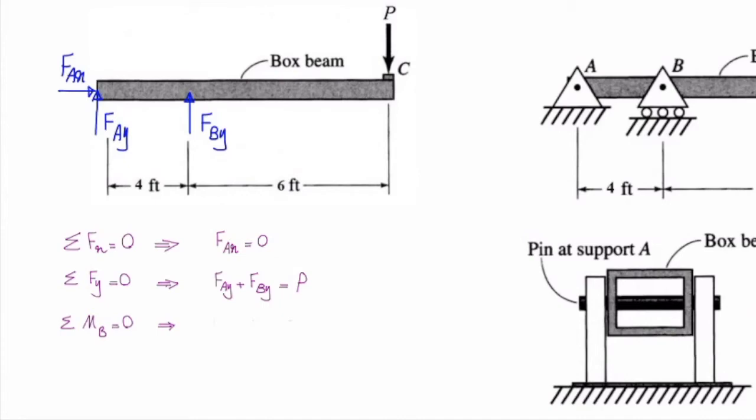That gives me four times FAy. I assume that clockwise is positive. How much is the moment caused by P? It's P times six. And that goes again clockwise, so I consider positive sign for that as well. So that would be P times six.